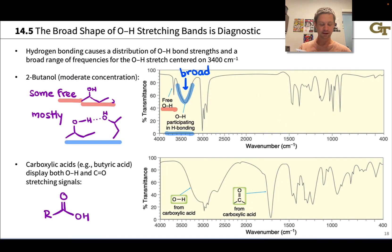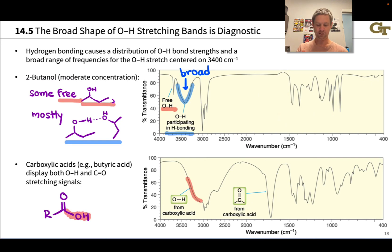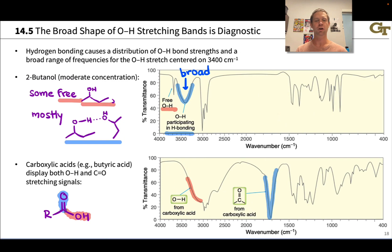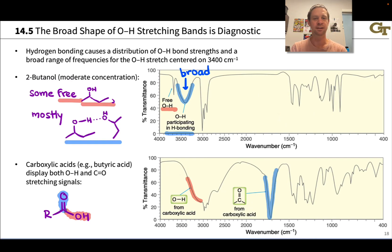Carboxylic acids display the same thing. They have a hydroxyl group similar to alcohols, and the unique feature here is that carboxylic acids display both the broad O-H stretching signal and the relatively sharp, very intense C=O double bond stretching frequency around 1700 wavenumbers. The breadth of the O-H signal in carboxylic acids has to do with hydrogen bonding associated with the O-H bond, which weakens that bond to different degrees depending on how close the hydrogen bond acceptor is.